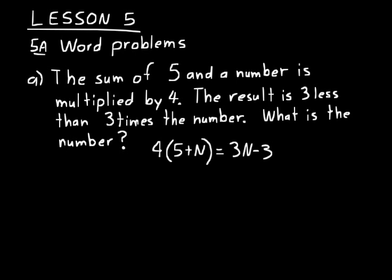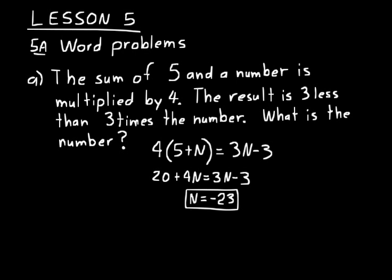So what is the number? We simplify this relationship and expand on the left: four times five is twenty, plus four times n is 4n, equals 3n minus three. Now, changing sides and changing signs: move 3n to the left — 4n minus 3n is n. Move the twenty to the right — negative twenty and negative three is negative twenty-three. So n equals negative twenty-three. That's our answer.